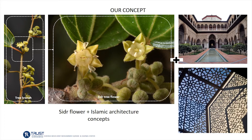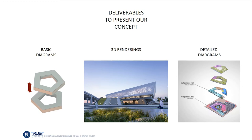The Sedri tree flower is native to Qatar and was mentioned in the Holy Quran in several positions. We were also inspired by traditional elements of Islamic architecture, which helped to overcome some of the project challenges. These elements were the sahn, or courtyard, and the mashrabiyya, where both help to reduce the temperature, maintain privacy, and add an authentic touch to the building design. To express and implement these ideas on the building, we needed to submit several deliverables with different visualization styles — basic diagrams, 3D renderings, and detailed diagrams.